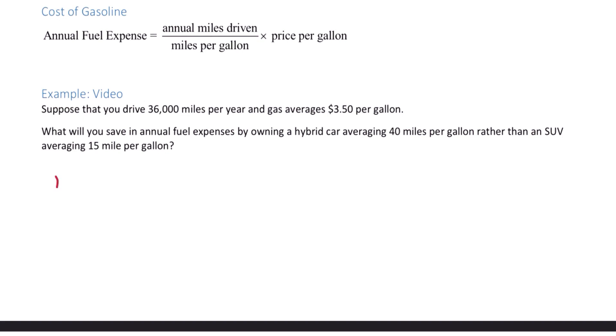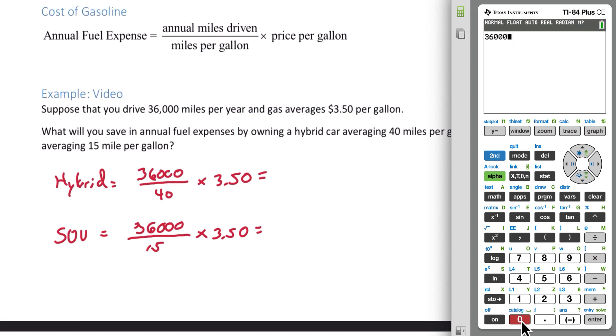The hybrid is 36,000 divided by the miles per gallon, 40, times $3.50 per gallon. 36,000 divided by 40 times $3.50. We get $3,150.